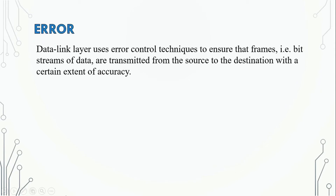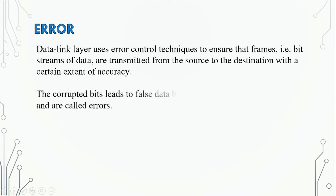The data link layer uses error control techniques to ensure that frames or bit streams of data are transmitted from the source to the destination with a certain extent of accuracy. The corrupted bits lead to false data being received by the destination and are called errors.